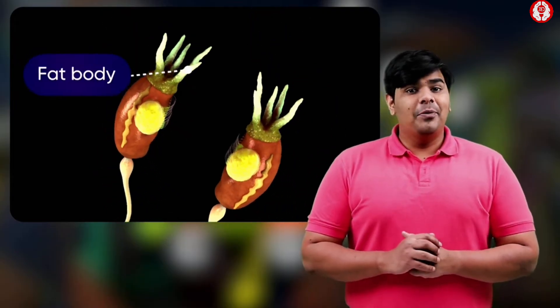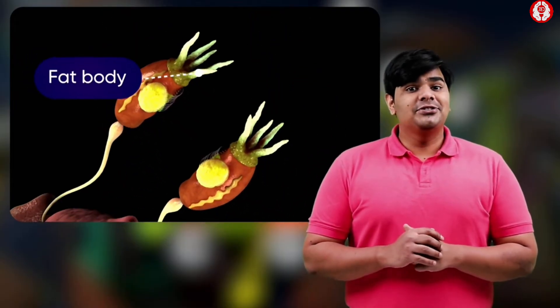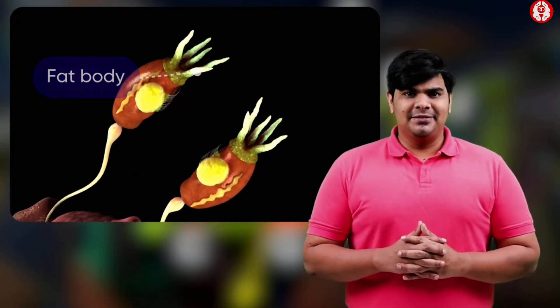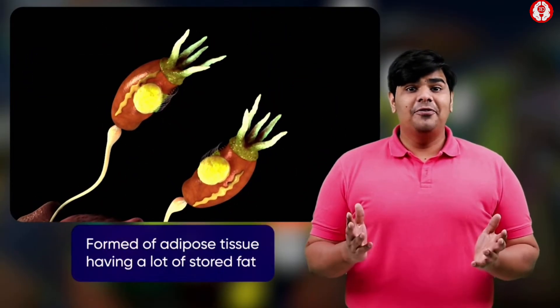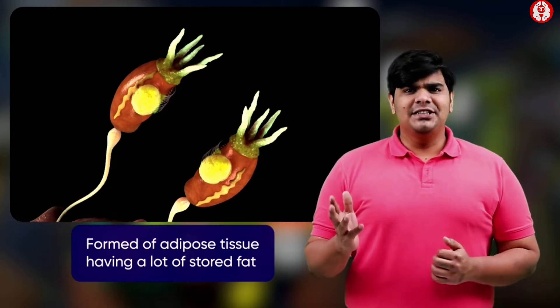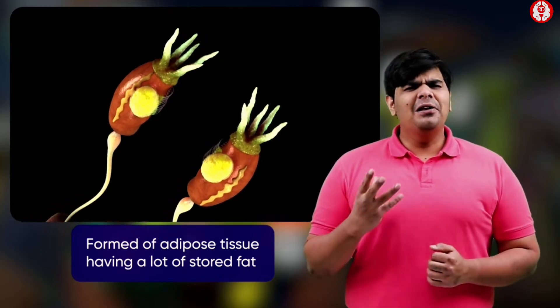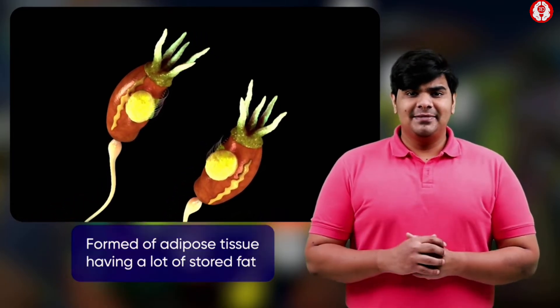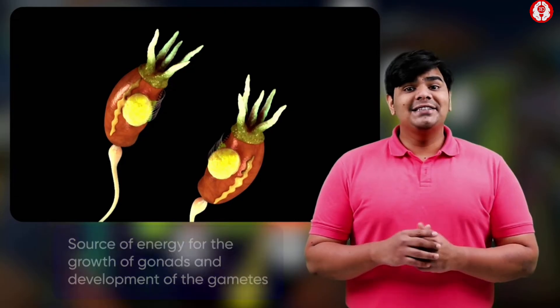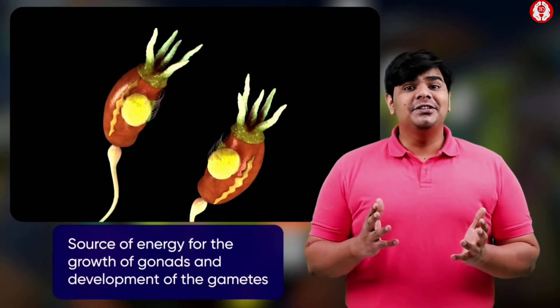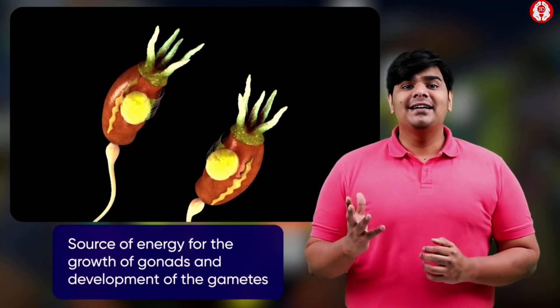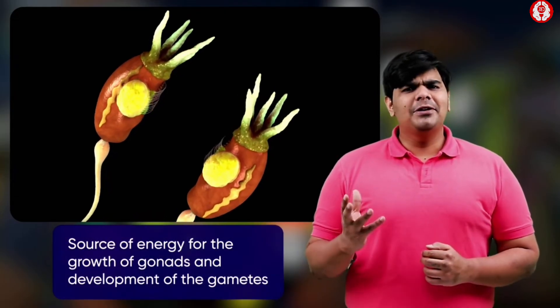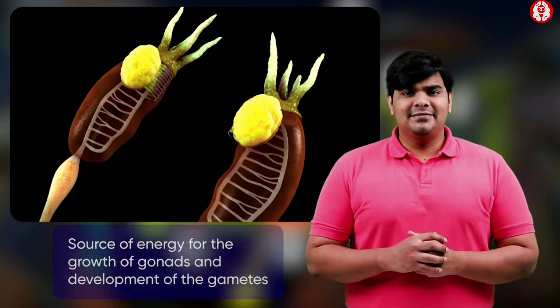The fat bodies are additional structures associated with the reproductive system. They are formed of adipose tissue having a lot of stored fat in its cells. This fat is utilised as a source of energy for the growth of gonads and development of the gametes.